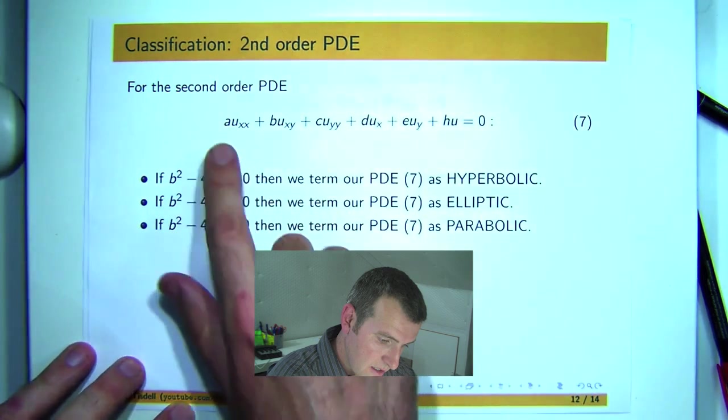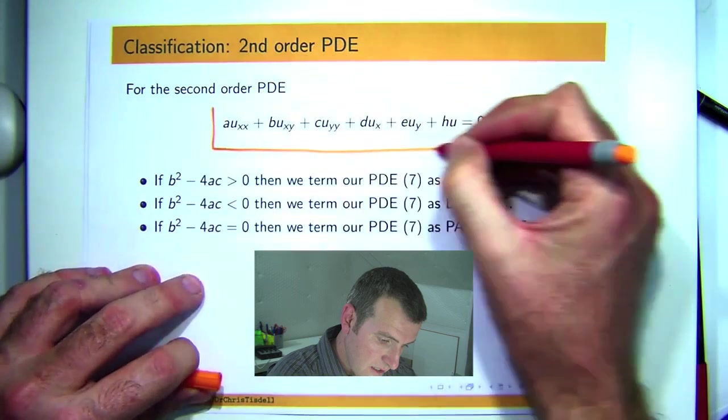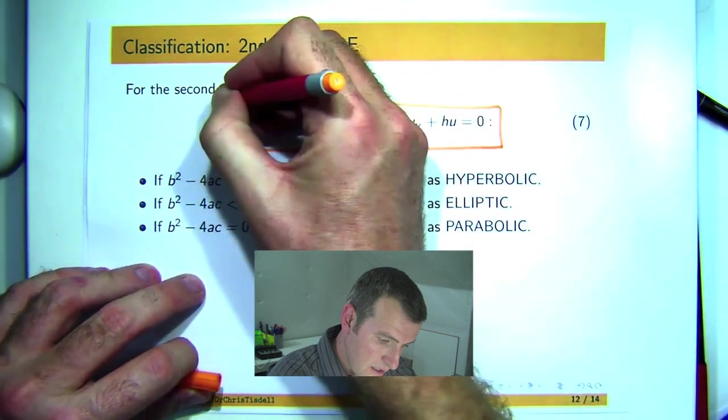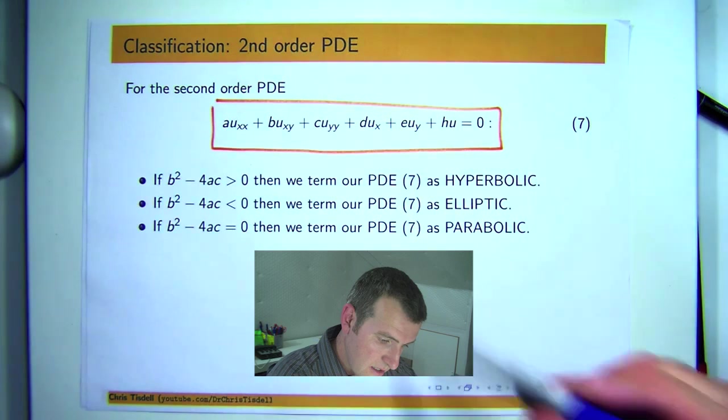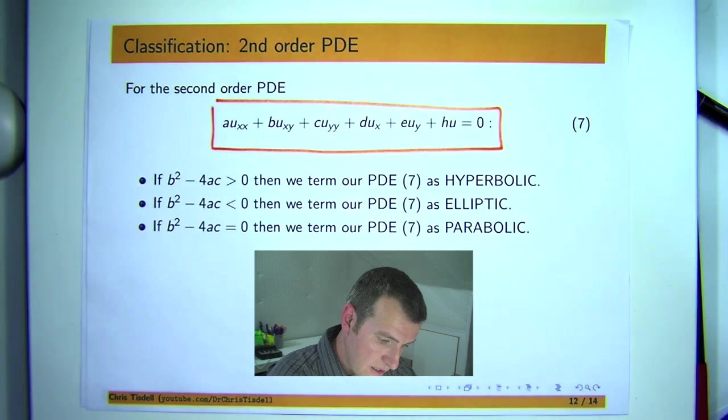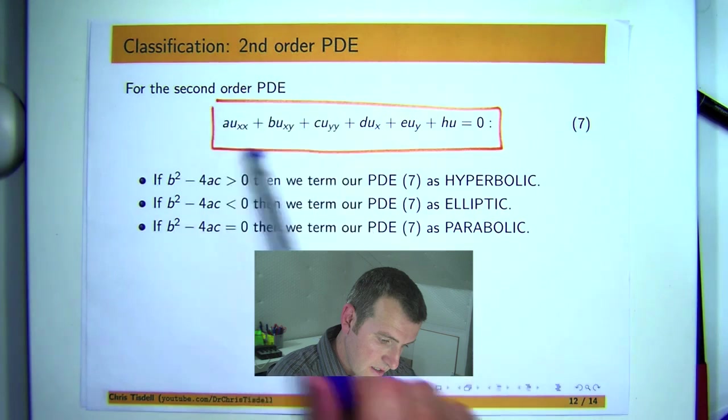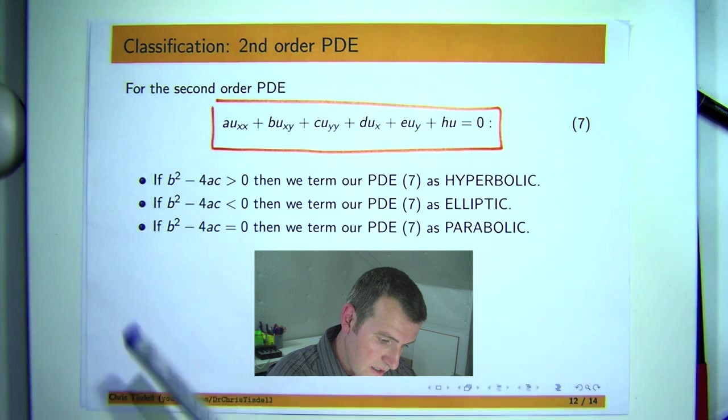In this presentation we're going to look at the slightly more general problem, where you allow first-order derivatives into the mix, and the coefficients may not necessarily be constant, they could be functions. Now the actual ideas are the same as essentially the purely second-order problems that we looked at in the previous video. So it's not a big jump from that kind of problem to this kind of problem.